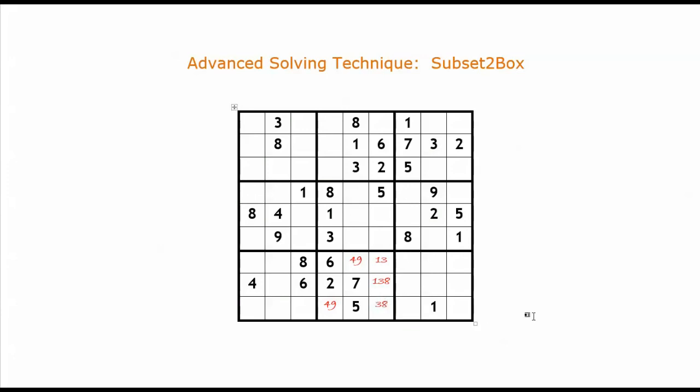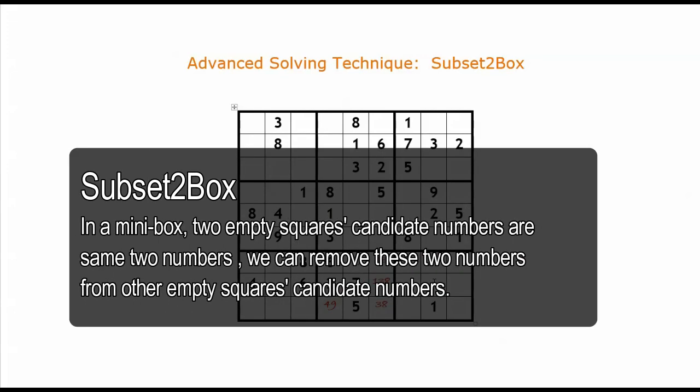We call this method subset. For this special case, on our website www.createclassicalsudoku.com, we call it subset toolbox. That is, two numbers must be filled in two empty squares in a mini box. Therefore, other empty squares can remove these two numbers from their candidate numbers.